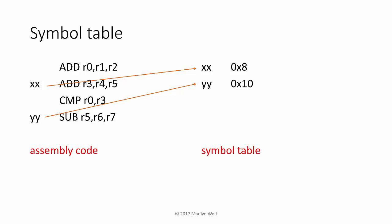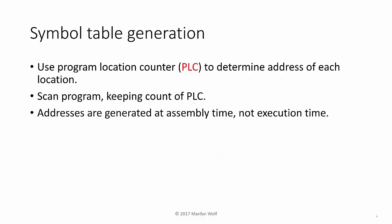Otherwise we would have to type in a numeric address directly. When we generate the symbol table, we use a program location counter, or PLC, to keep track of the address at each location in the assembly language code. We scan the program keeping count of the PLC. These addresses are generated at assembly time, not at execution time — so the PLC is not a program counter. It doesn't change with execution; it's simply a bookkeeping tool for figuring out the address of a label.